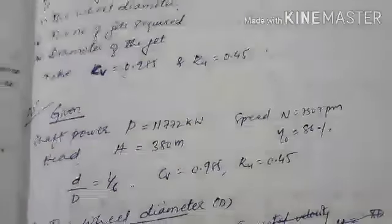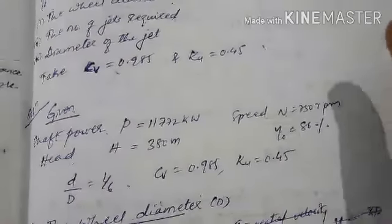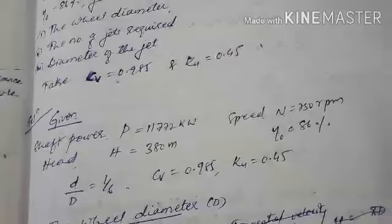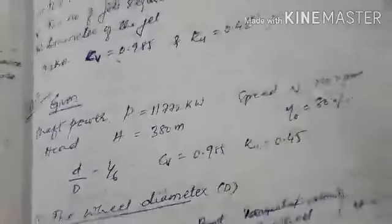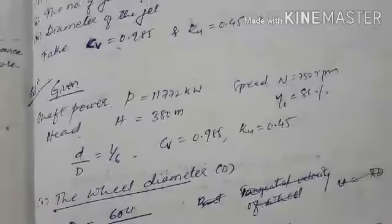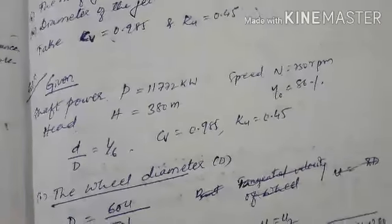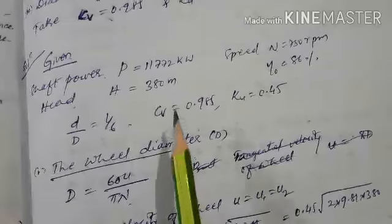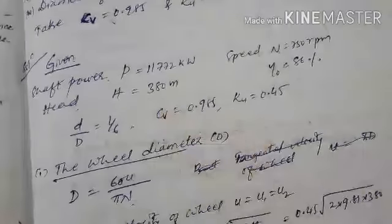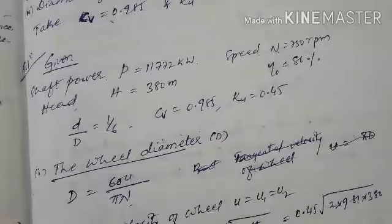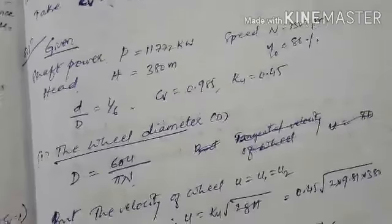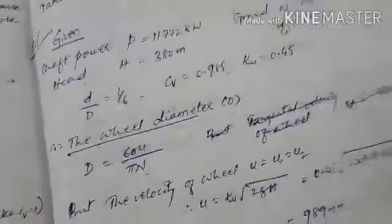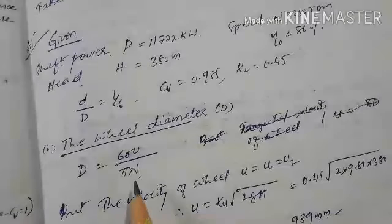We are asked to calculate the wheel diameter, the jet diameter, and how many jets are required to develop the power of 11,772 kilowatt. Let us calculate first the wheel diameter.